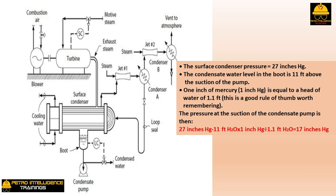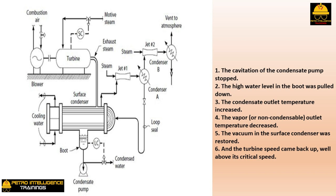To stop the suspected air leak, water was sprayed from a hose over the pump seal. Instead of sucking air, the leaking seal drew in cold water. As a result: (1) cavitation of the condensate pump stopped; (2) the high water level in the boot was pulled down; (3) condensate outlet temperature increased; (4) the vapor/non-condensable outlet temperature decreased; (5) vacuum in the surface condenser was restored; and (6) turbine speed came back up well above its critical speed — but not for long.